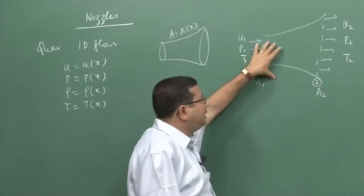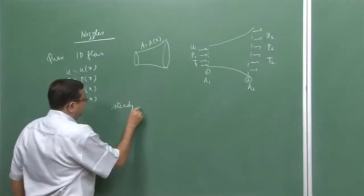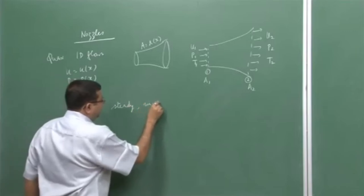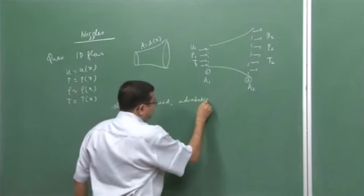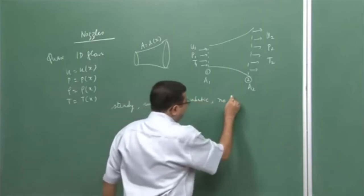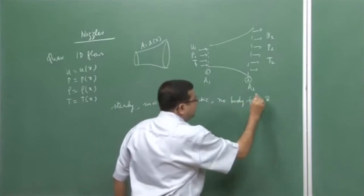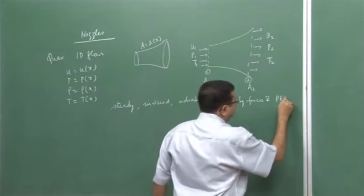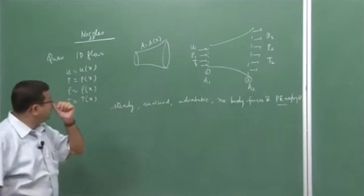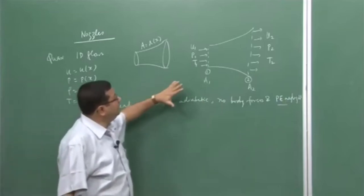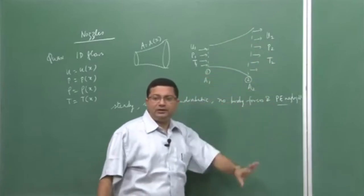For that, we had made certain assumptions: the flow is steady, inviscid, adiabatic, no body forces, and potential energy is negligible. With these assumptions, we derived the continuity equation, momentum equation, and energy equation.